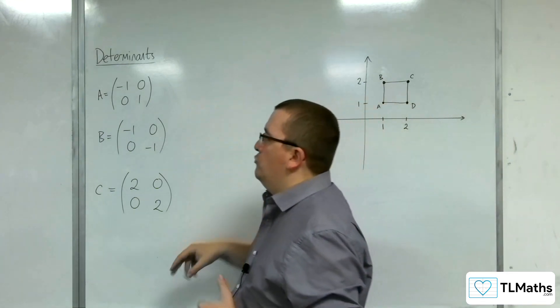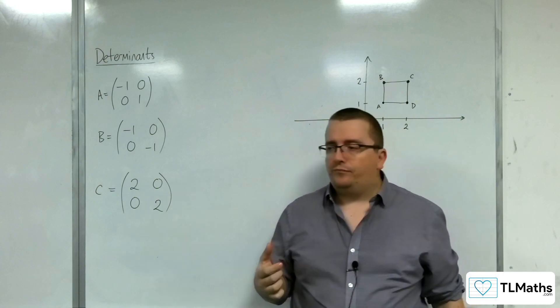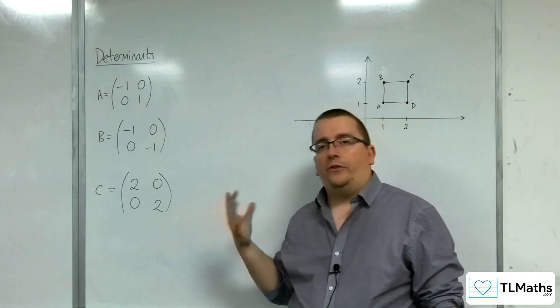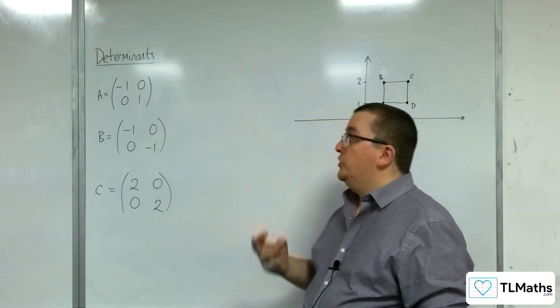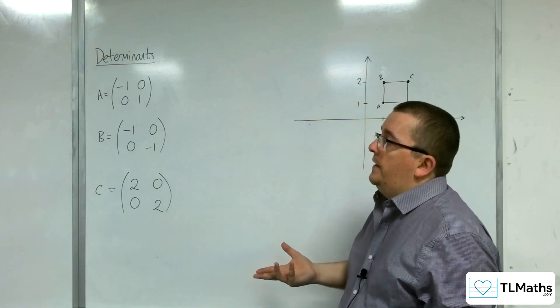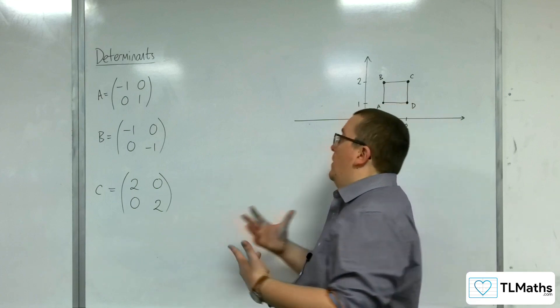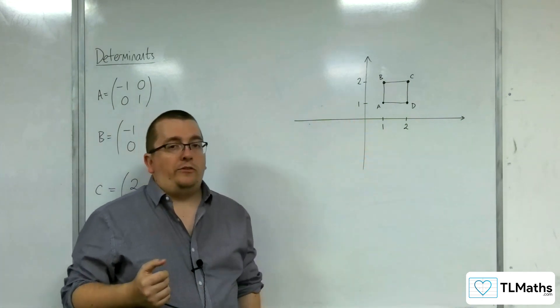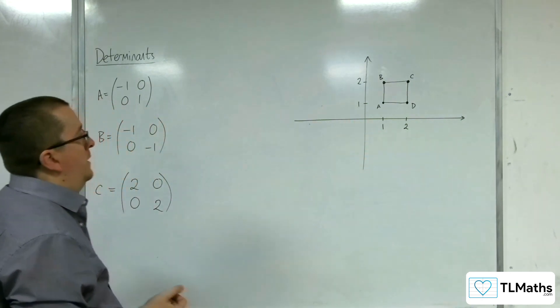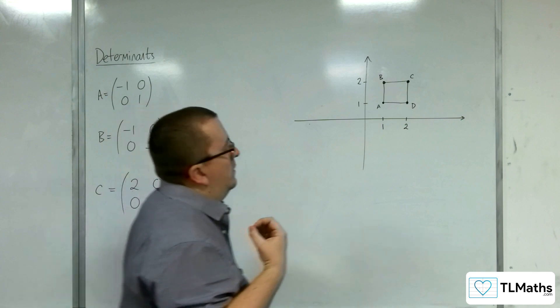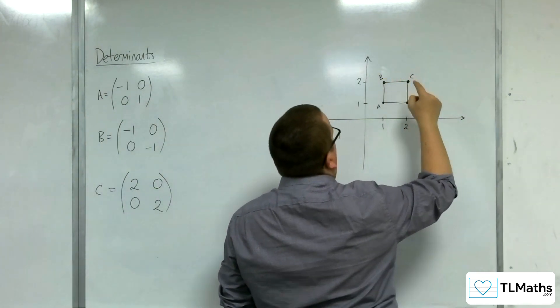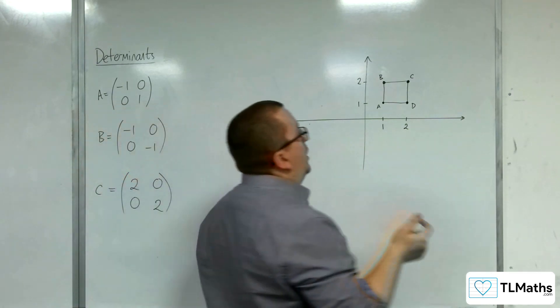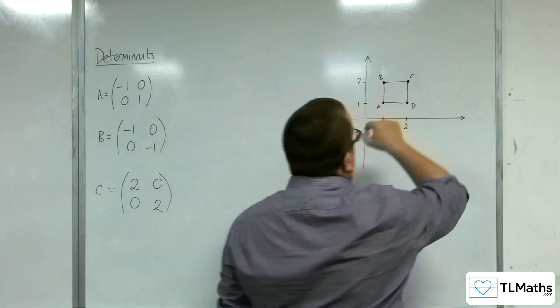So I've written down here three 2×2 matrices. You might immediately recognize by now what these types of matrices are and what they're going to do. What we're going to do is look and see what these matrices do to this unit square that I've drawn. I've given it the points (1,1), (1,2), (2,2), and (2,1), and labeled the corners of the square A, B, C, D going around clockwise.